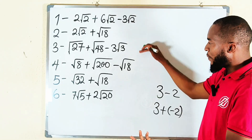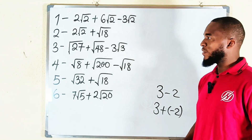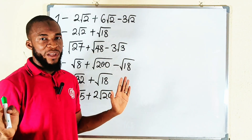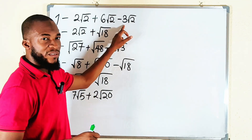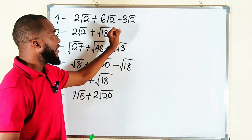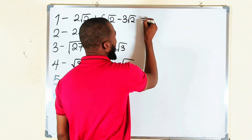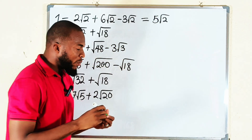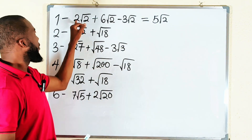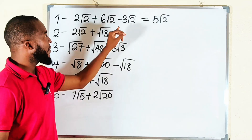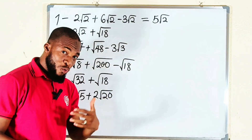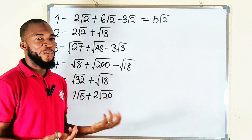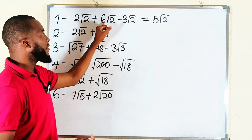Only the first one can be called a similar surd. Whenever you have similar surds, it's always very simple — just pay attention to the coefficients. Two plus six is eight, and eight take away three is five. Then you bring back your square root of two. You can also look at the square roots as a variable like x: two x plus six x is eight x, take away three x is five x, where x is square root of two.